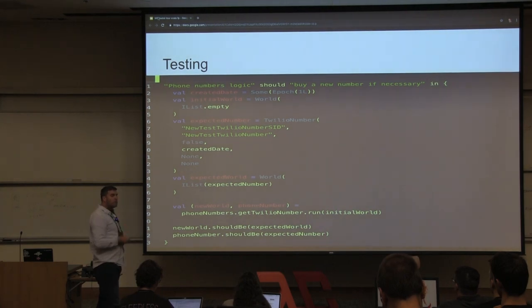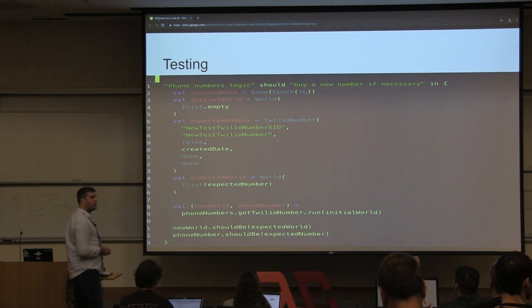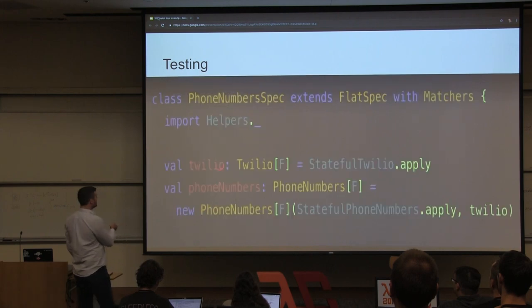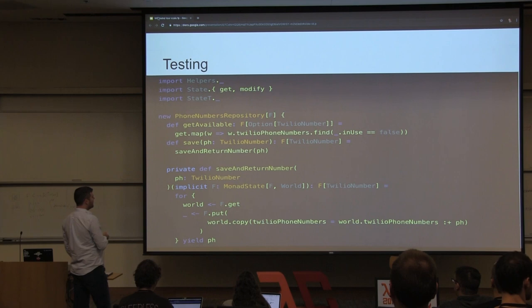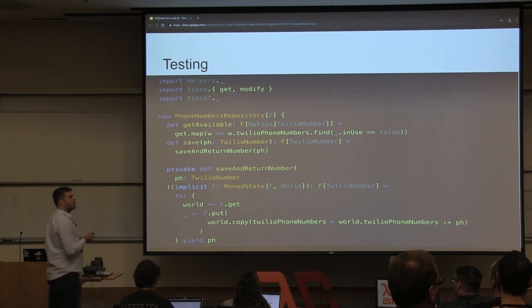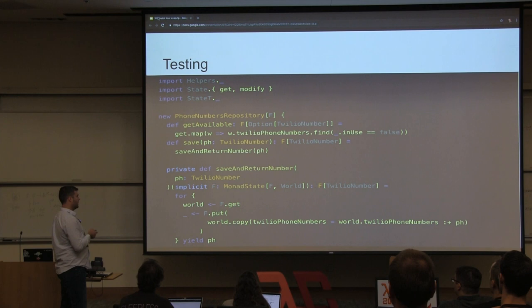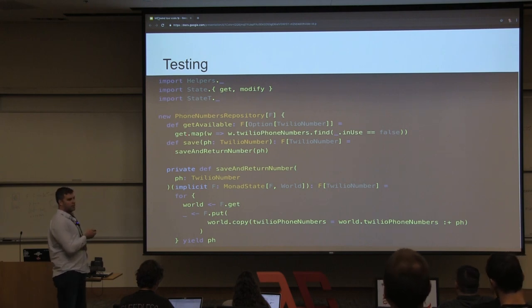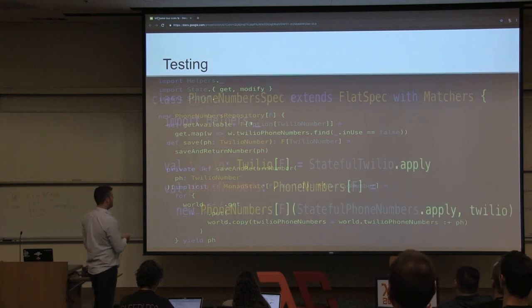Any questions about testing? Someone asked whether you can still make mistakes when implementing the traits. Yes, you can make a mistake. But I would argue that it's harder to make a mistake implementing your traits in this method than implementing them with a bunch of injected mock objects. It's definitely not going to make you perfect — you have to be careful when implementing those things.